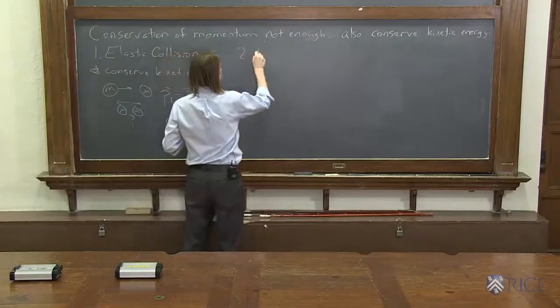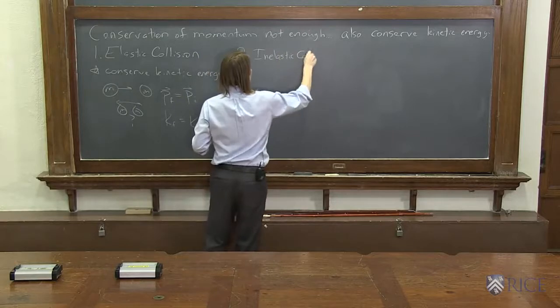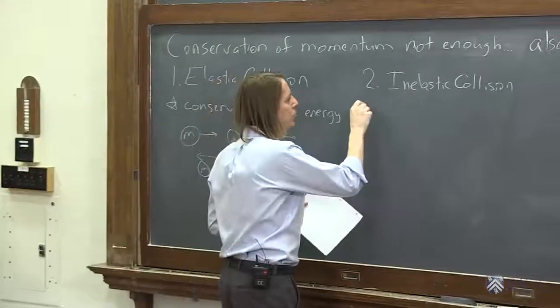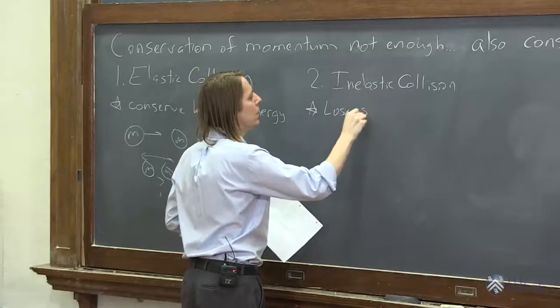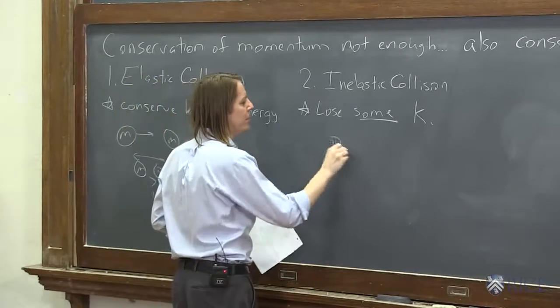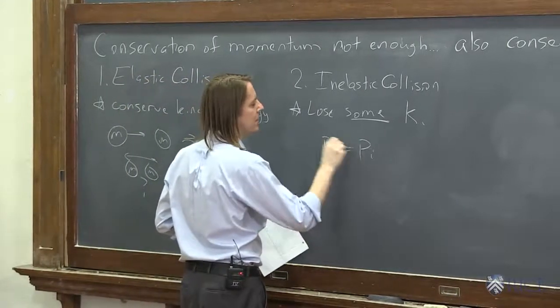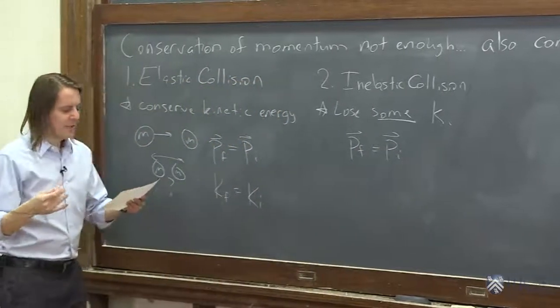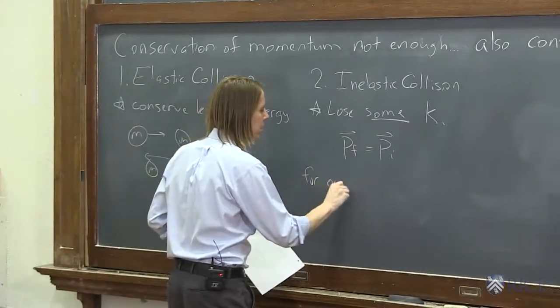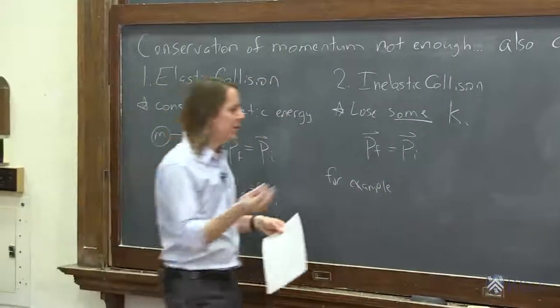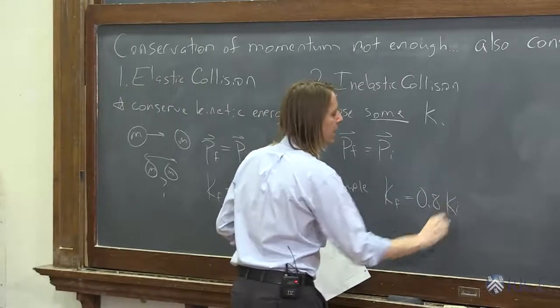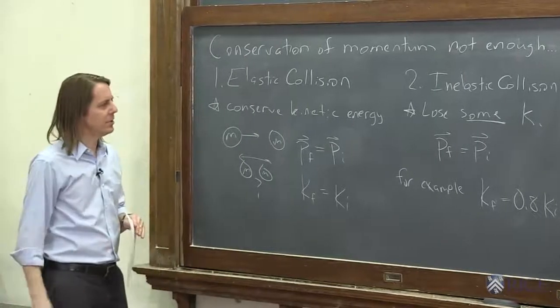Another kind of problem is an inelastic collision. In an inelastic collision, you lose some kinetic energy. And of course, you still conserve momentum. So P final equals P initial. But then in a problem, you'll be given how much kinetic energy you lose. So for example, I might say in this collision you lost 20% of your kinetic energy. So say K final equals 0.8 K initial. And it would probably be some numerical problem with some plug and chug and you would get to the bottom of it.